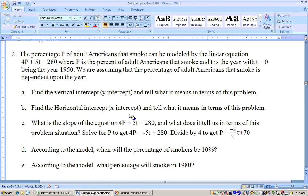The horizontal intercept, x-intercept, you let y equals 0, and you get 5t equals 280, divide through by 5, and you get t equals 56. What does that mean? Well, it means 56 years after 1950, nobody will smoke, according to this model.